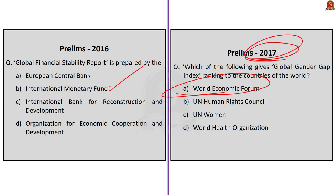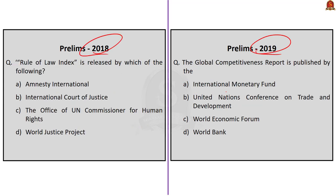This index ranks countries based on gender progressiveness. Now the 2018 question: Rule of Law Index is released by which of the following? Option A: Amnesty International. Option B: International Court of Justice. Option C: Office of UN Commissioner for Human Rights. Option D: World Justice Project. The correct answer is option D, World Justice Project.